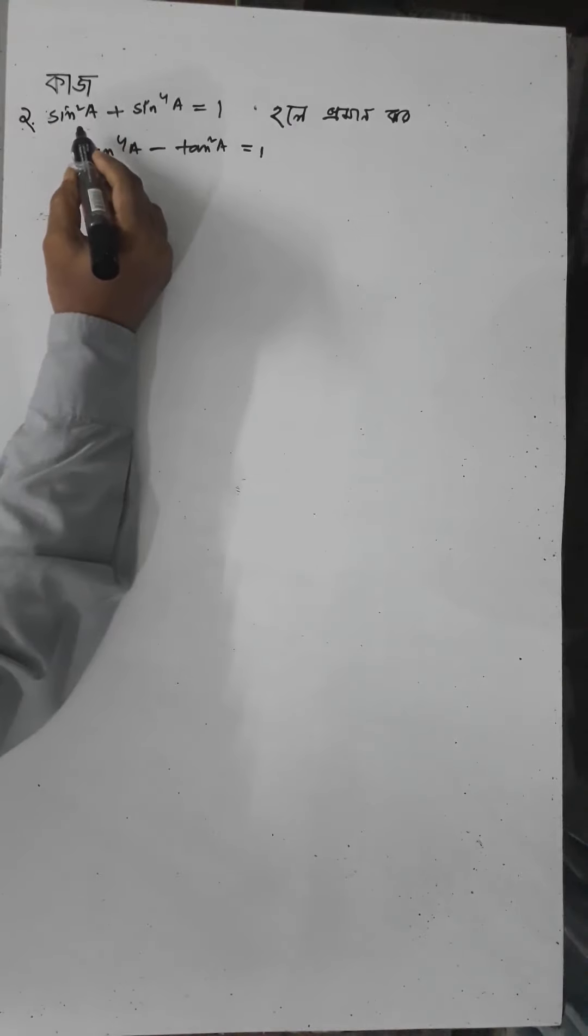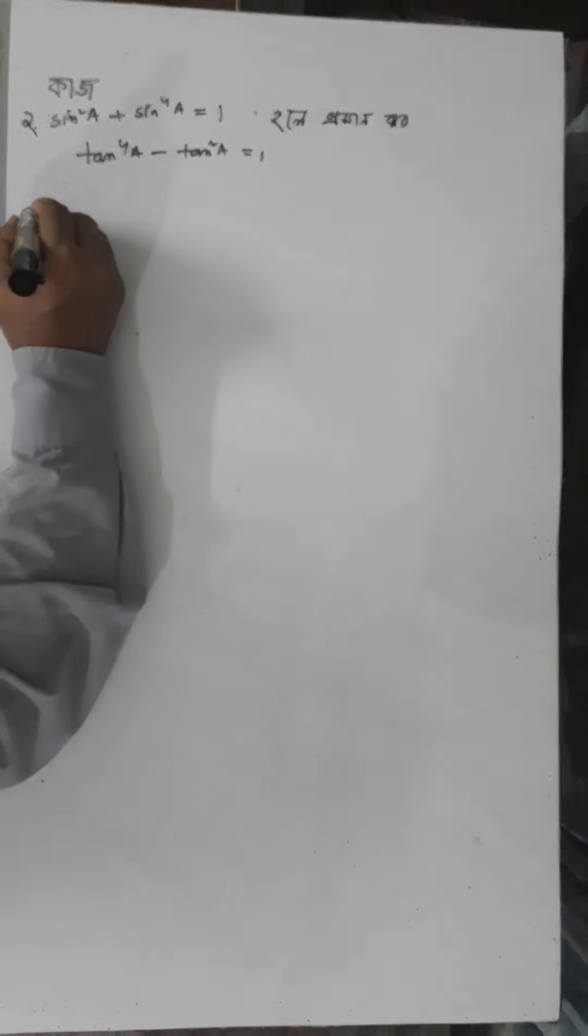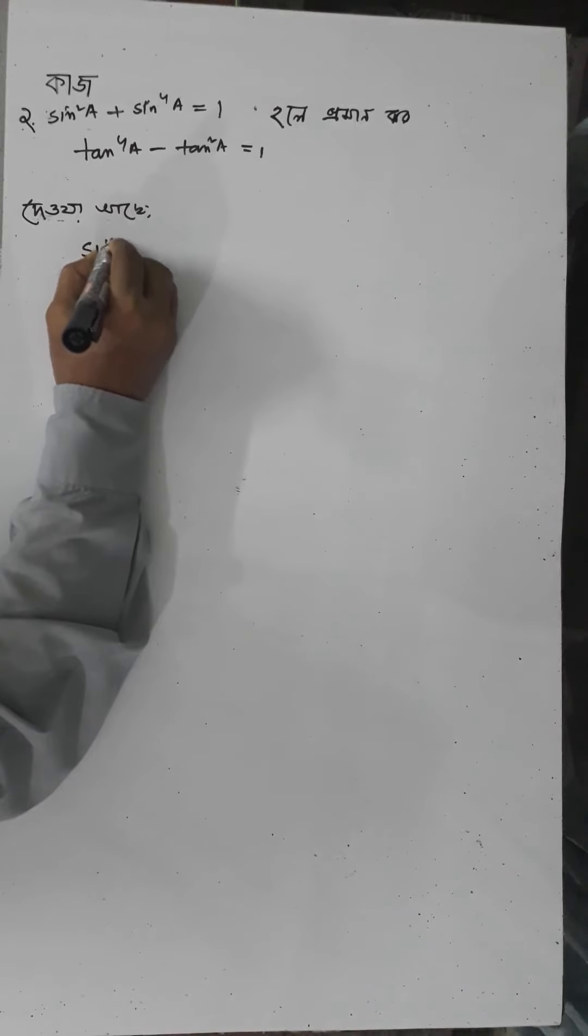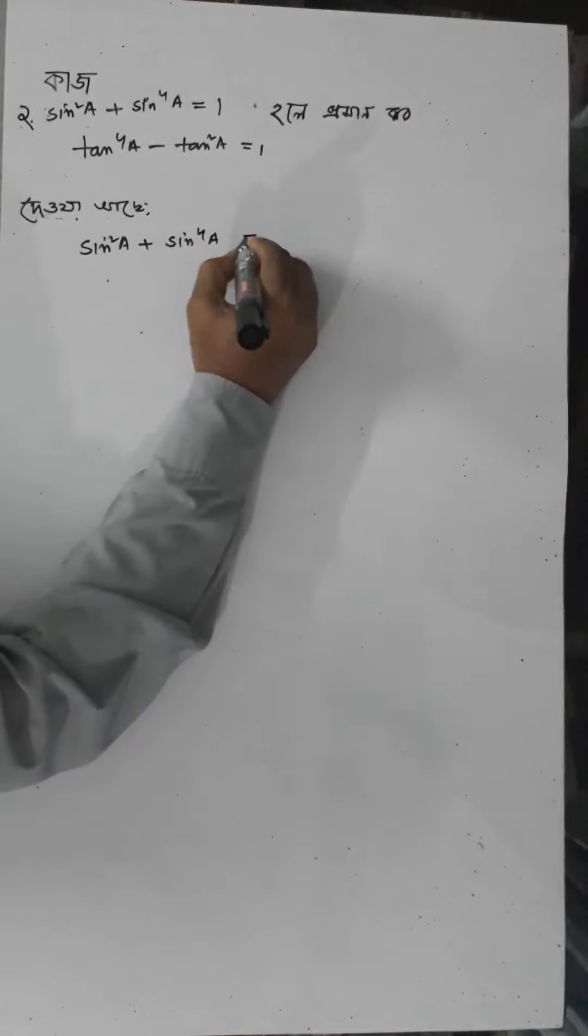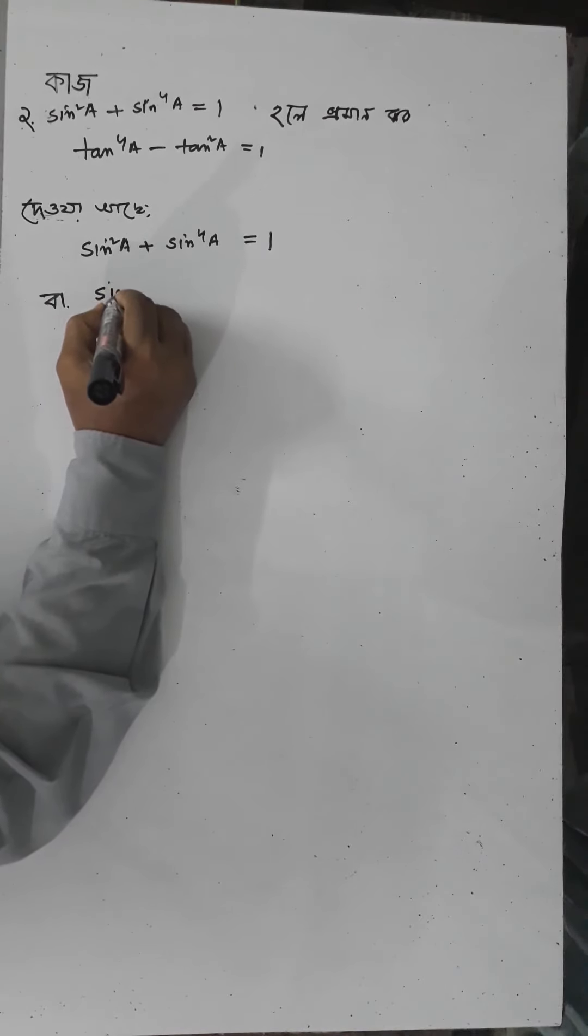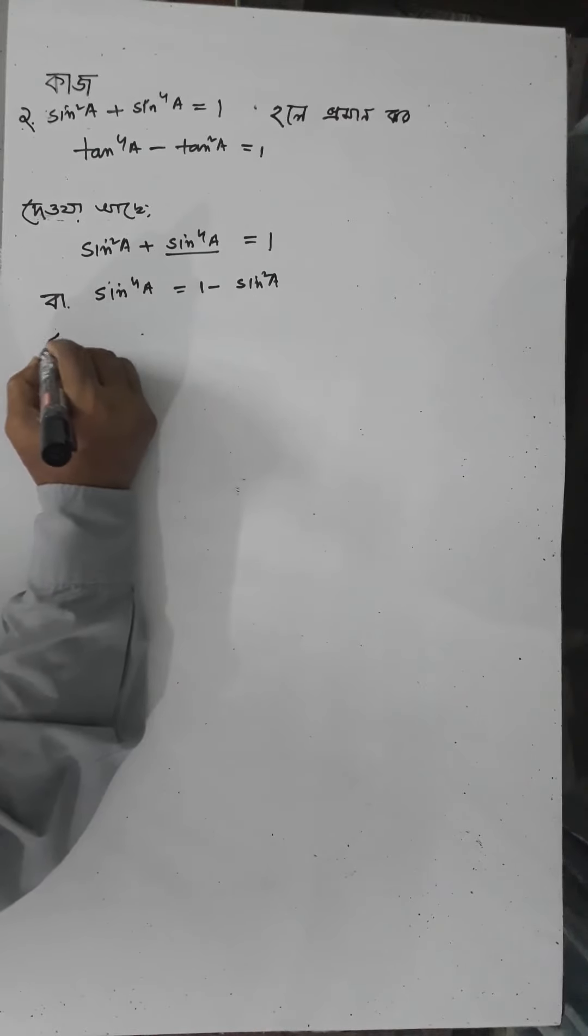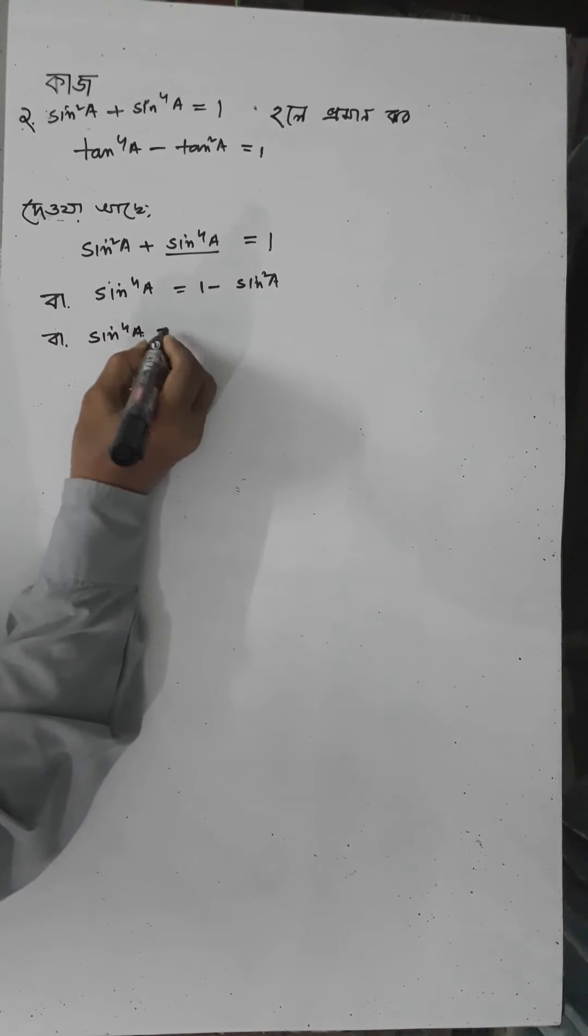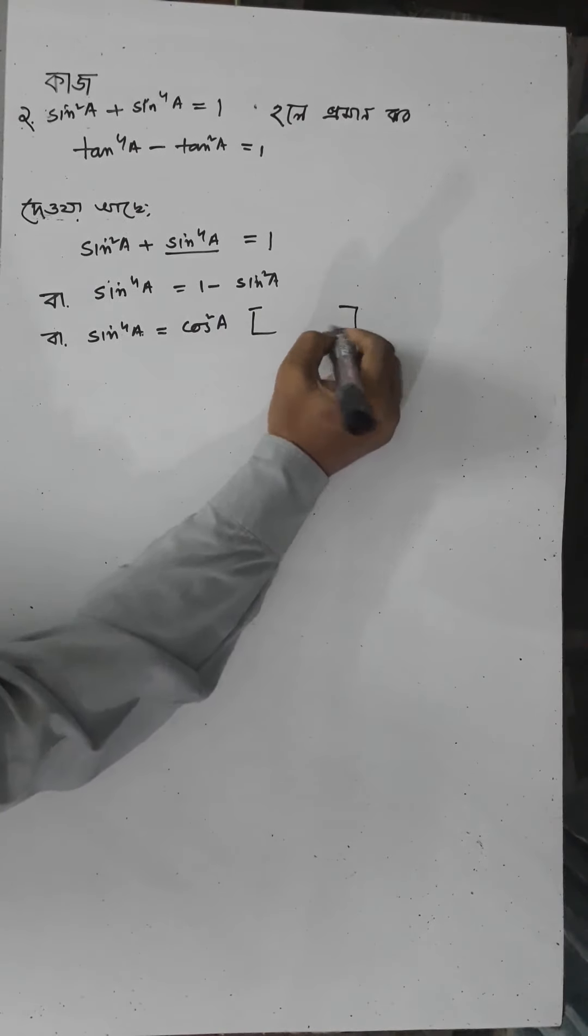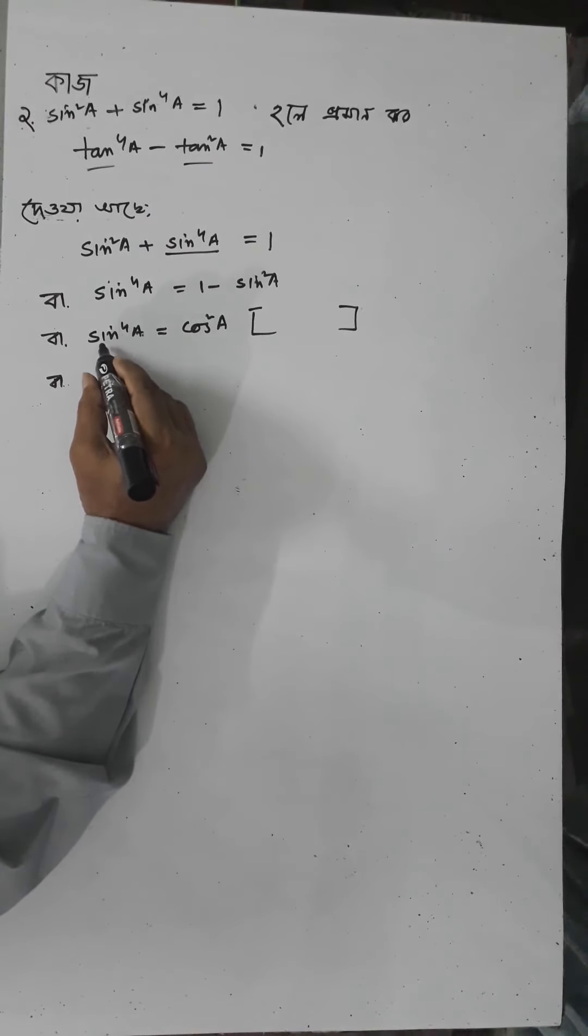The problem is sin²a plus sin⁴a equals 1. Same as sin²a plus sin⁴a equals 1, but sin⁴a we have to write as 1 minus sin²a. 1 minus sin²a equals cos²a. Now we have cos²a.